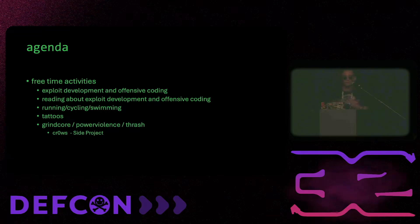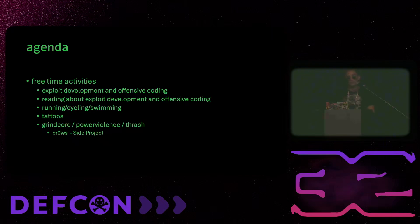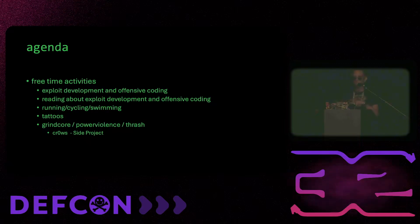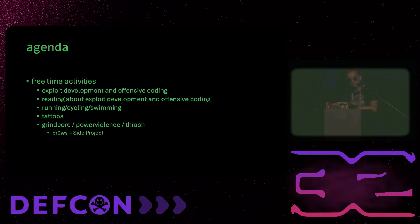Free time activities: I do like to read a lot — basically if my head is not in a book, it's in another book. I like to practice my offensive coding skills, things like AV bypasses, AMSI bypasses, things you'll actually be using in the field. A lot of cycling, running, swimming — basically keeps the heart beating because I like to break into buildings, so the better I take care of myself, the more I can keep doing this as a profession.